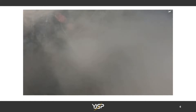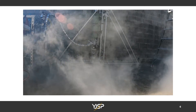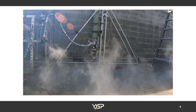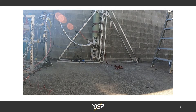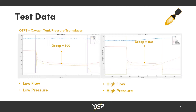That's a flow using liquid nitrogen — all that smoky-looking stuff is really cold gas. Here's some data from that test showing two different flows: one was done at low flow and low pressure, the other at high flow rate and high pressure. You can see the droops are significantly different, one being 300 and one being 160. The data we're looking at is from the oxygen tank.